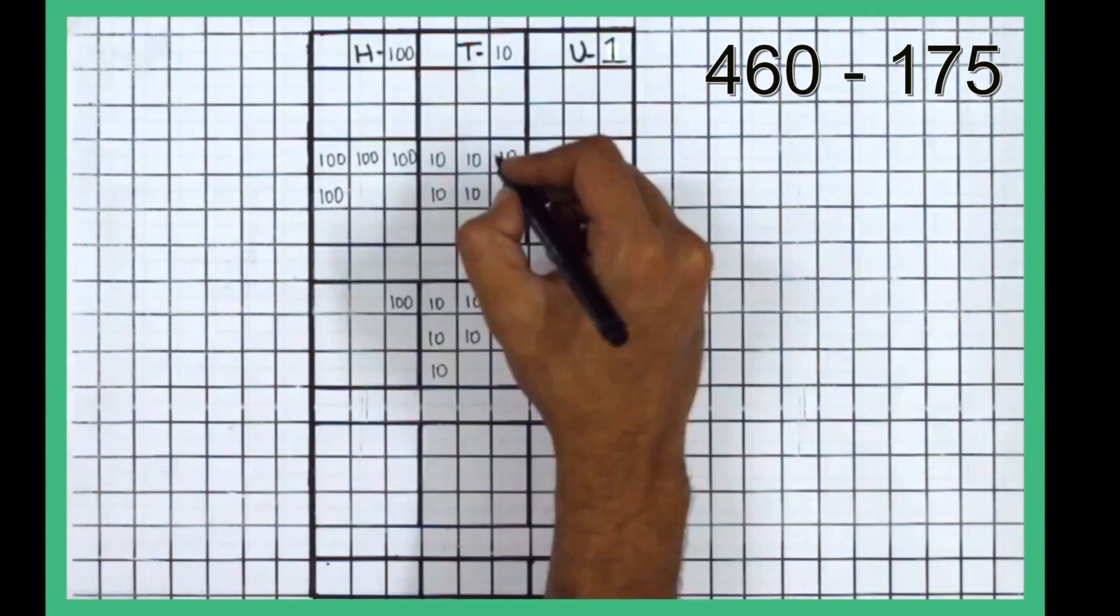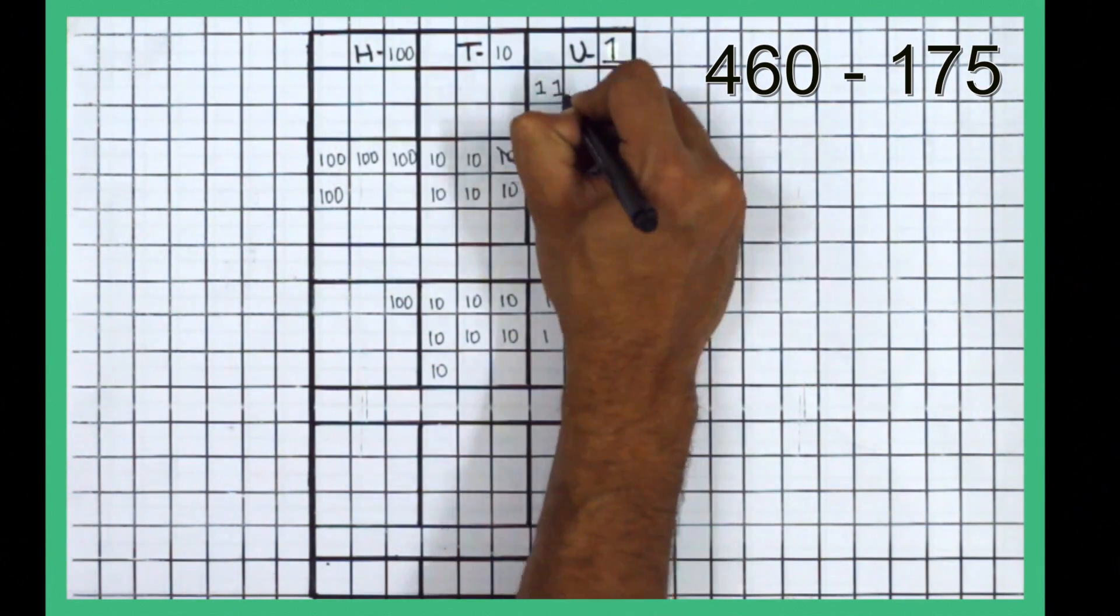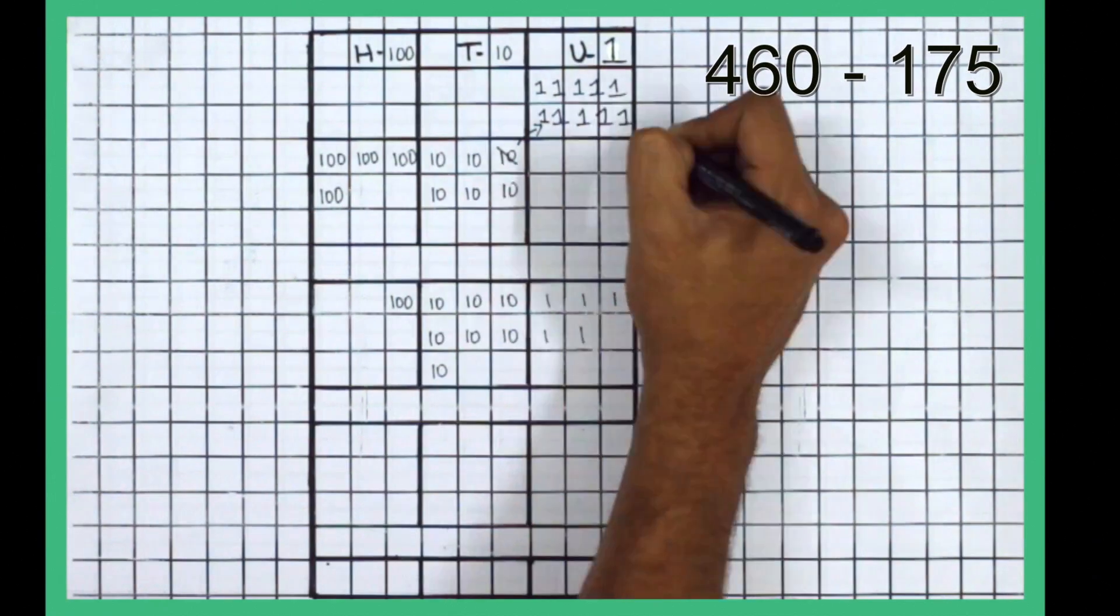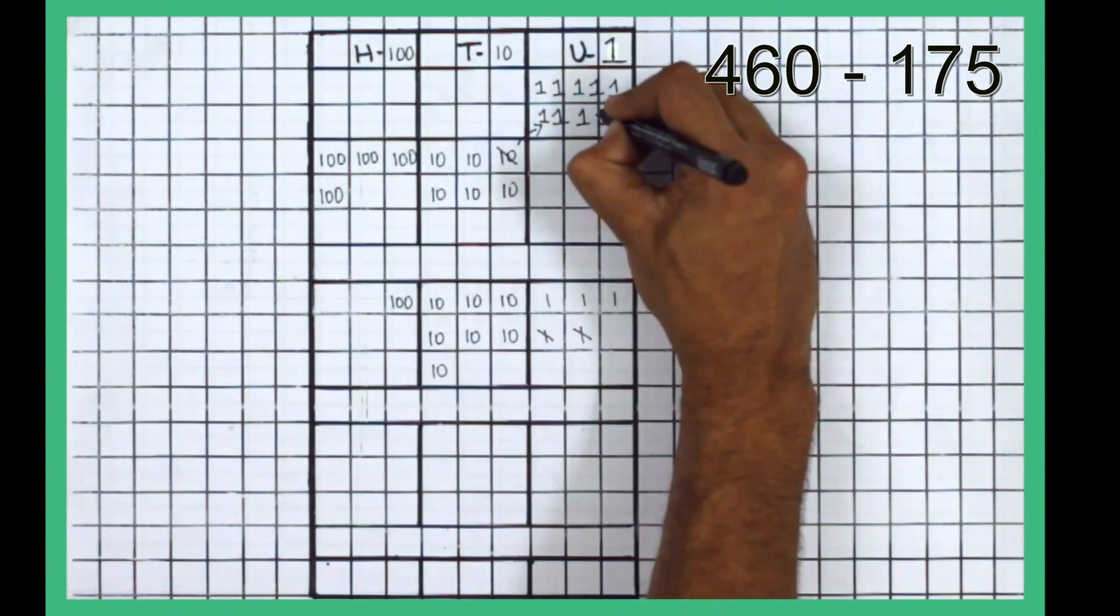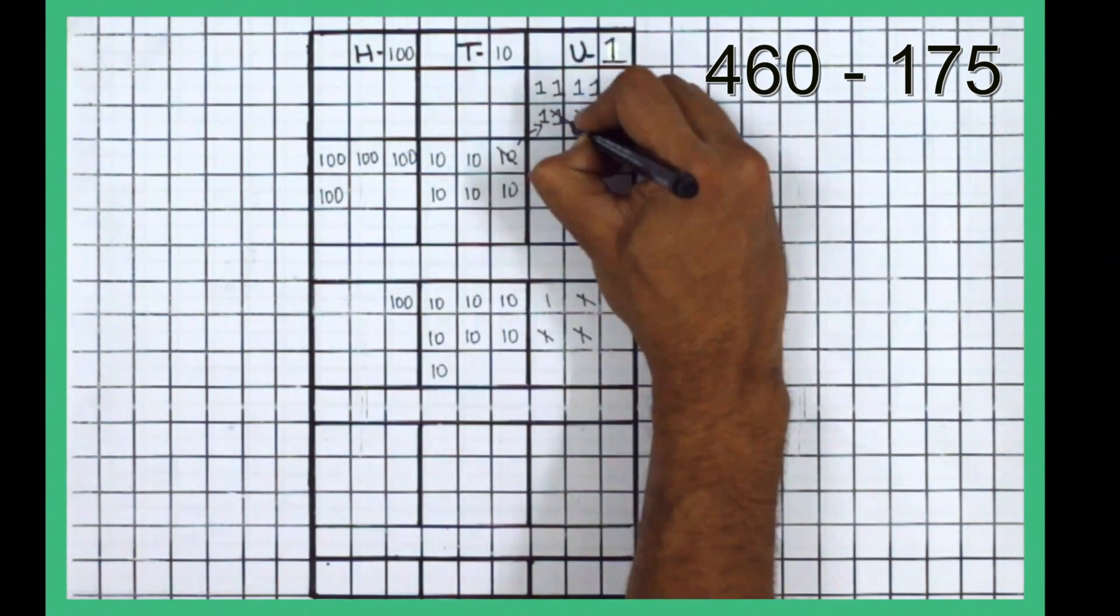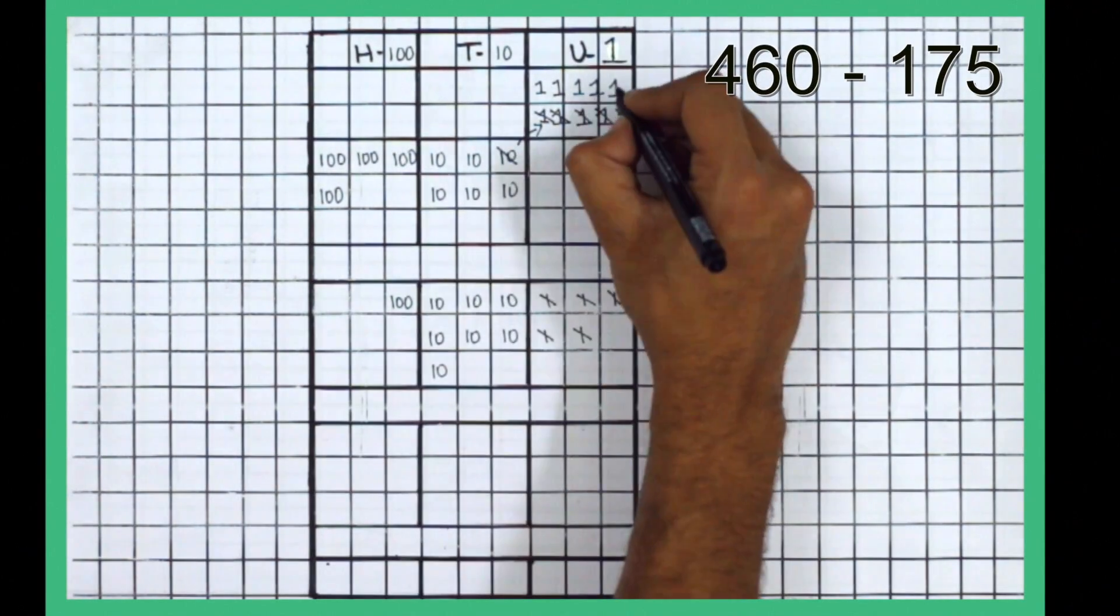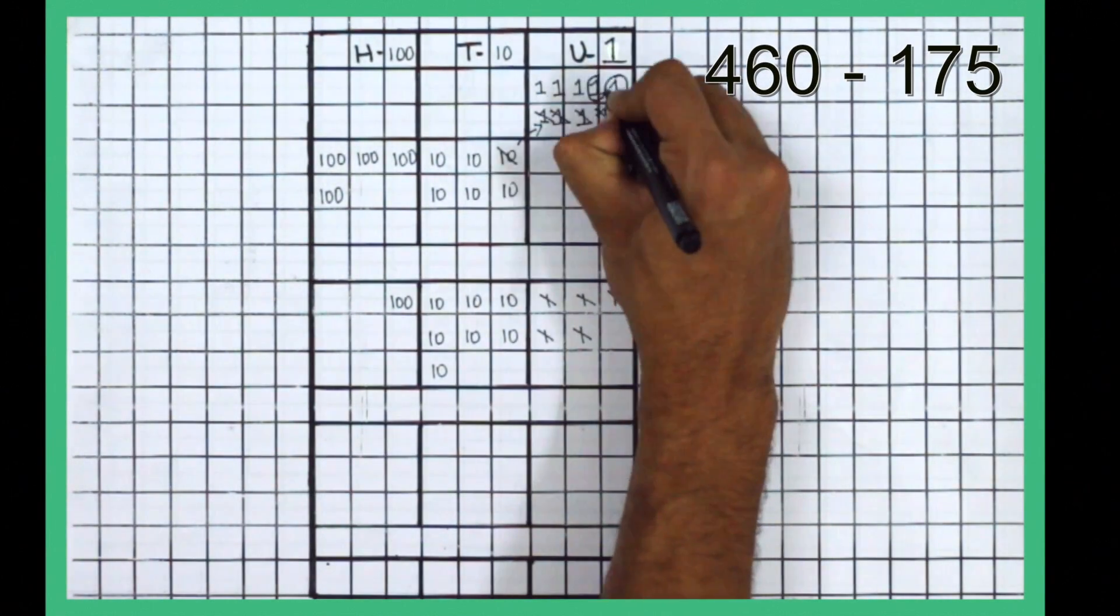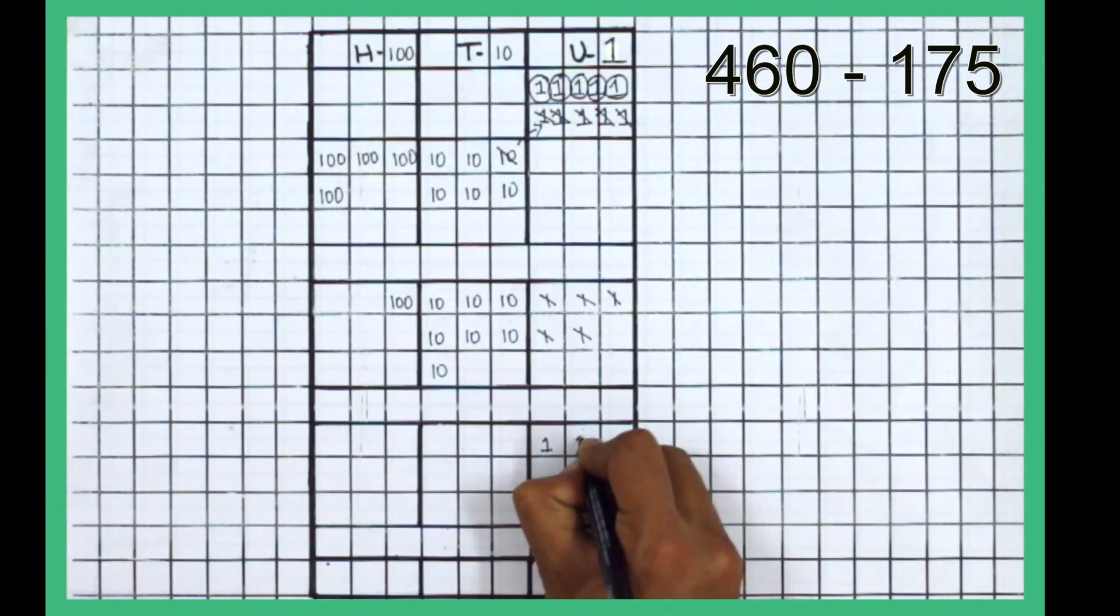Borrow a 10 and show as ones in the borrow box above. Strike as many ones in the minuend as in the subtrahend. Circle and count the ones left in the units place of 460 and write below as the difference.